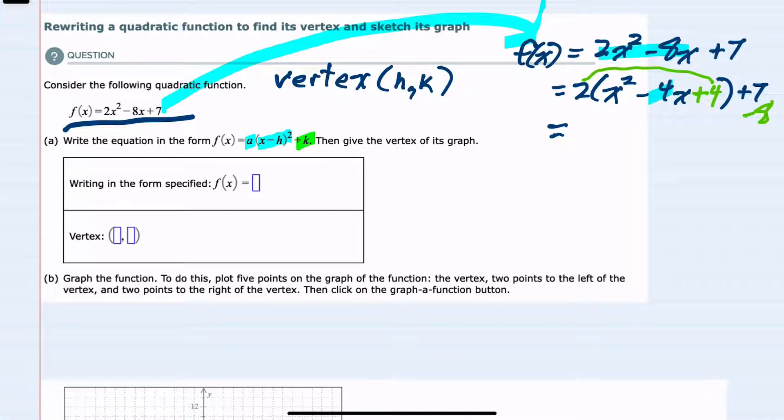From here, what's inside the parentheses is now going to be a perfect square. x² - 4x + 4 will factor as (x - 2)². That is giving us the form that we're looking for. Outside the parentheses, I've got +7 and -8, which simplifies to -1. By completing that square, we now have the a(x - h)² + k format. That's the first part of a.